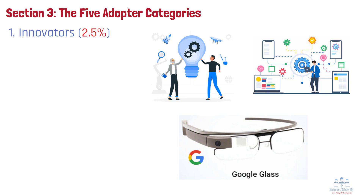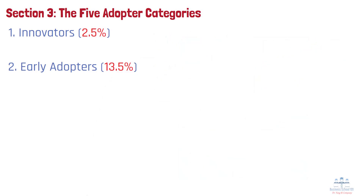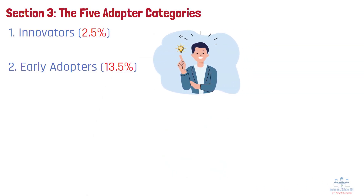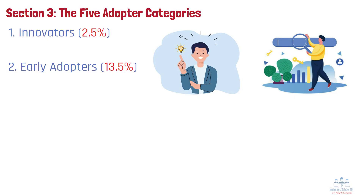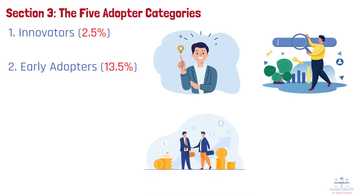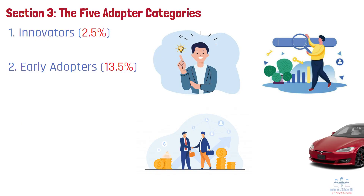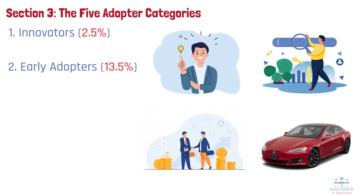Group 2: Early Adopters, 13.5%. Early adopters are influential and respected opinion leaders. They tend to be more socially connected and serve as role models. They look for real value and aren't swayed just by hype. Businesses often focus on this group during launches because their endorsement helps drive broader adoption. Think of how Tesla's Model S attracted early adopters who wanted cutting-edge innovation, environmental value, and social status.